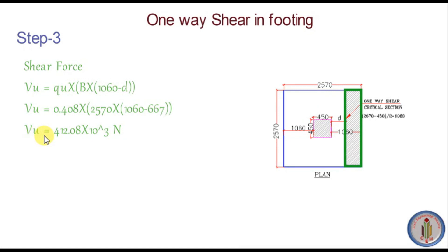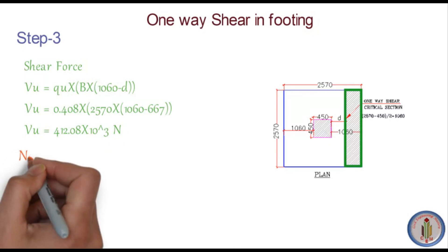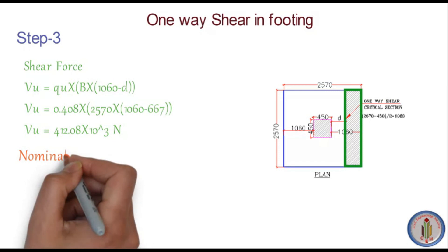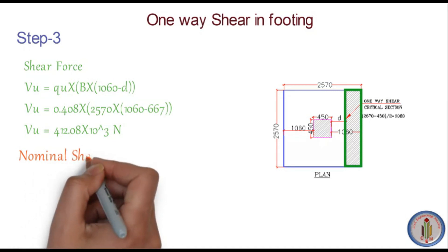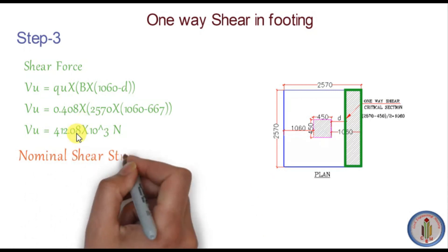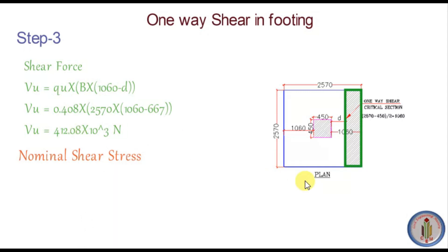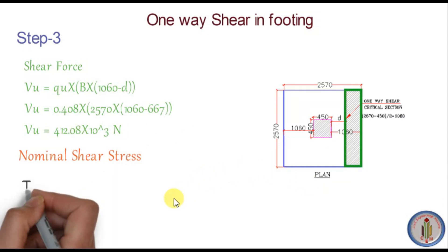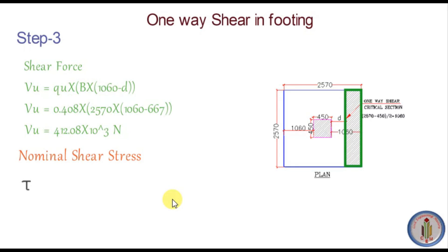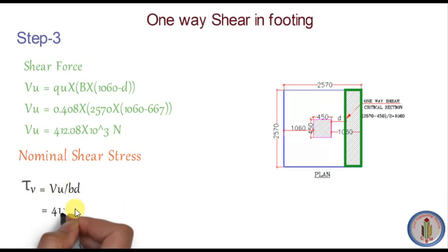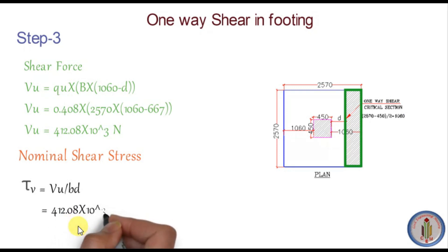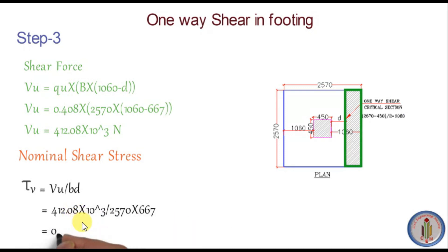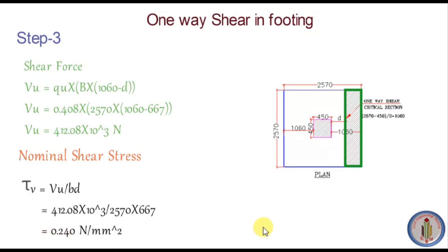Next, let's calculate the nominal shear stress, tau_v = Vu / (B × d). With the known values of Vu, breadth of footing, and effective depth, we calculate the nominal shear stress tau_v and get 0.240 N/mm².